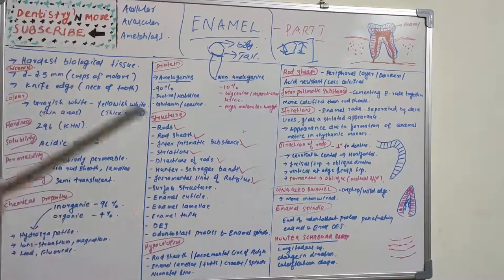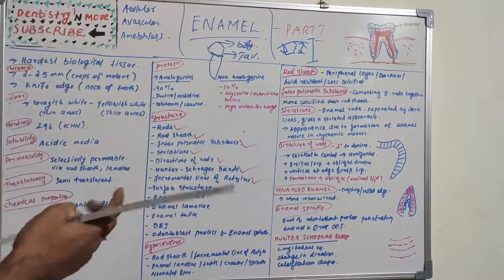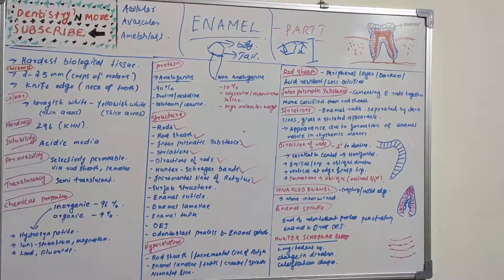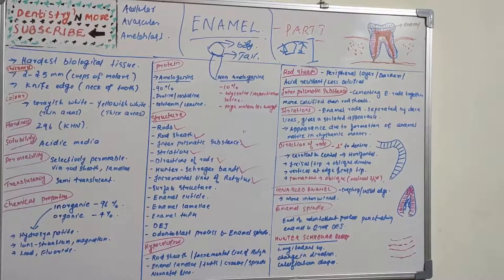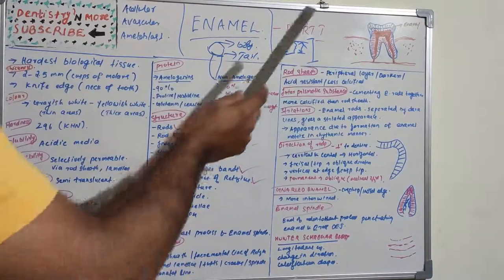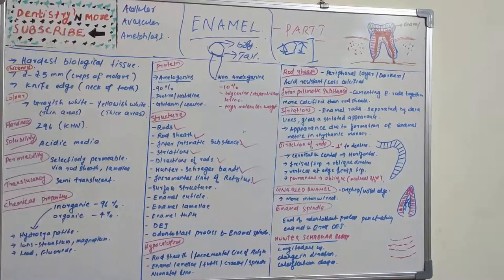Hunter-Schreger bands appear as alternating white and black bands in oblique light in longitudinal section. Similarly, incremental lines of Retzius are brownish bands seen in ground sections of enamel, indicative of mineral apposition. In longitudinal section they surround the cusp tip, running oblique and deviating to the occlusal side. In transverse section they appear as concentric circles.